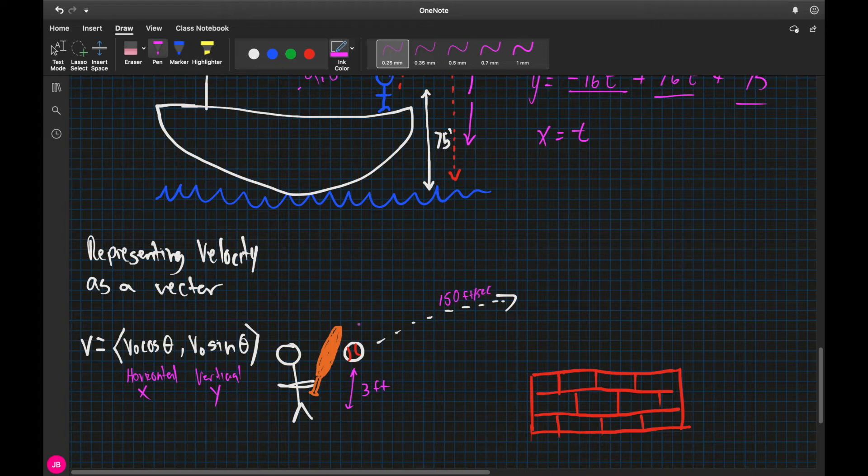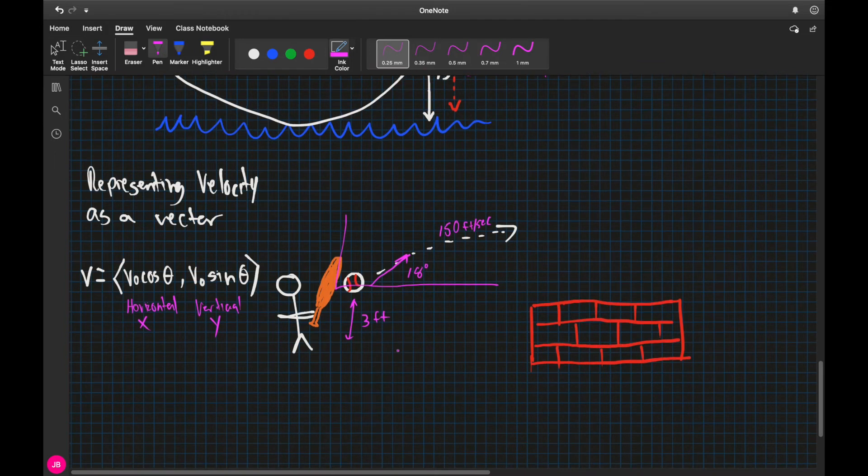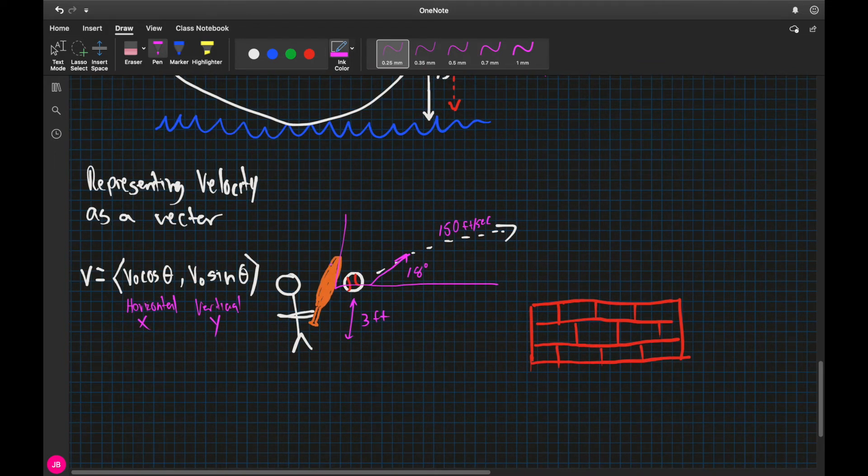Now, the angle at which it flew, so now we're dealing with an angle. The angle at which this ball flew is going to be 18 degrees with the horizontal. So now it's getting a little bit more complicated, but it's really nothing to worry about because we're going to have a place for each of these numbers.